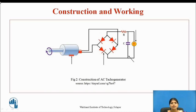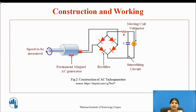The AC tachogenerator consists of a permanent magnet, a rectifier for converting AC output into DC, a smoothing circuit, a moving coil voltmeter, and the rotor where the speed is to be measured. When the rotor is stationary, no EMF is induced in the output winding, and the primary winding is excited by an AC input voltage. The induced voltage in the secondary is zero due to the relative position of the two windings being placed at 90 degrees to each other.